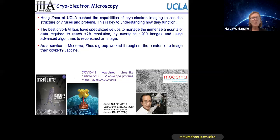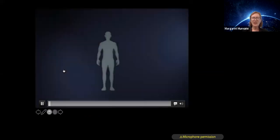And he achieves that by averaging over 200 images of a vaccine, and then using algorithms to help recover an image. And so Hong, last summer when most of us were not allowed into the universities because of the COVID outbreak, Hong's group was working at UCLA throughout the pandemic to help Moderna make an image of their vaccine.